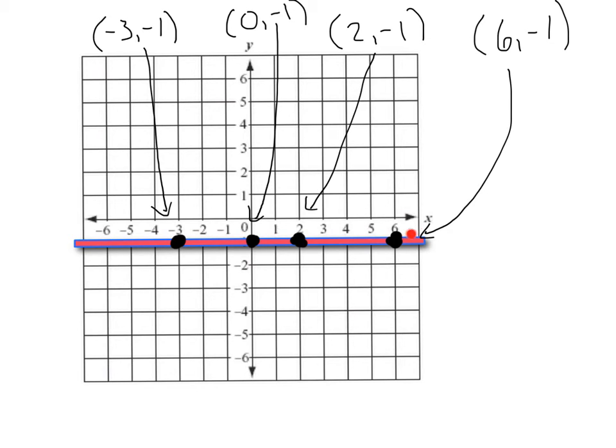If we pick any other point on this line, we'll notice it's always going to have a y value equal to negative 1. So, whenever graphing a horizontal line, you're always going to get an equation of y equals something. In this case, it would be y equals negative 1.